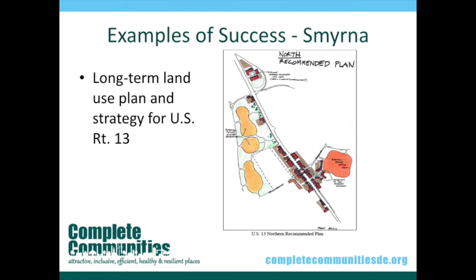The town of Smyrna is taking important steps to ensure economic prosperity. By developing a long-term land use and transportation master plan for US Route 13, which runs directly through the town, Smyrna will be able to attract investment and steer development to the areas in which it will be most beneficial. The study found that Smyrna's historic and retail sector had room for growth, and increased investment in the downtown area signaled more demand for urban living. Smyrna also worked with the Dover-Kent County Metropolitan Planning Organization, the Office of State Planning Coordination, the Delaware Department of Transportation, and consultants to develop a strategy for making the thoroughfare a more pleasant place to live and work.